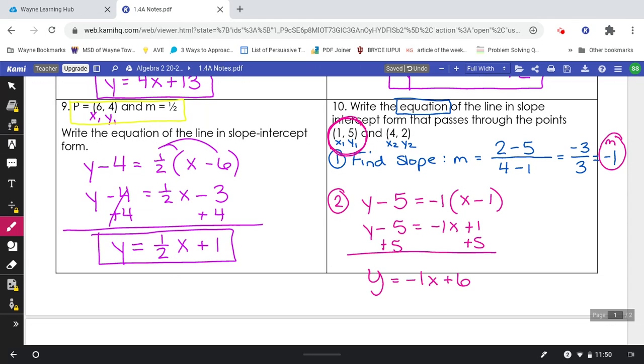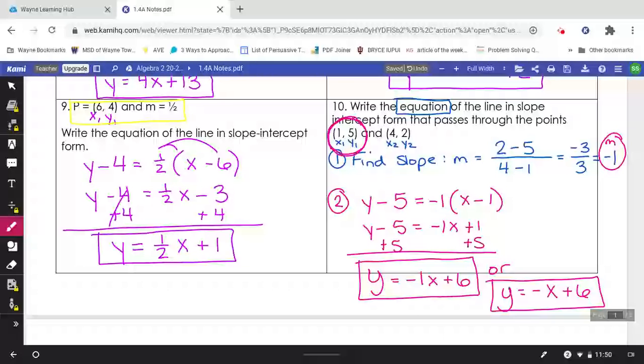You should get y equals negative 1 x plus 6. Or you might see it written without the 1. Oftentimes for slopes, if you have a 1 in front, they often leave it off, and they can just write it as negative x plus 6. Both of those are great answers.